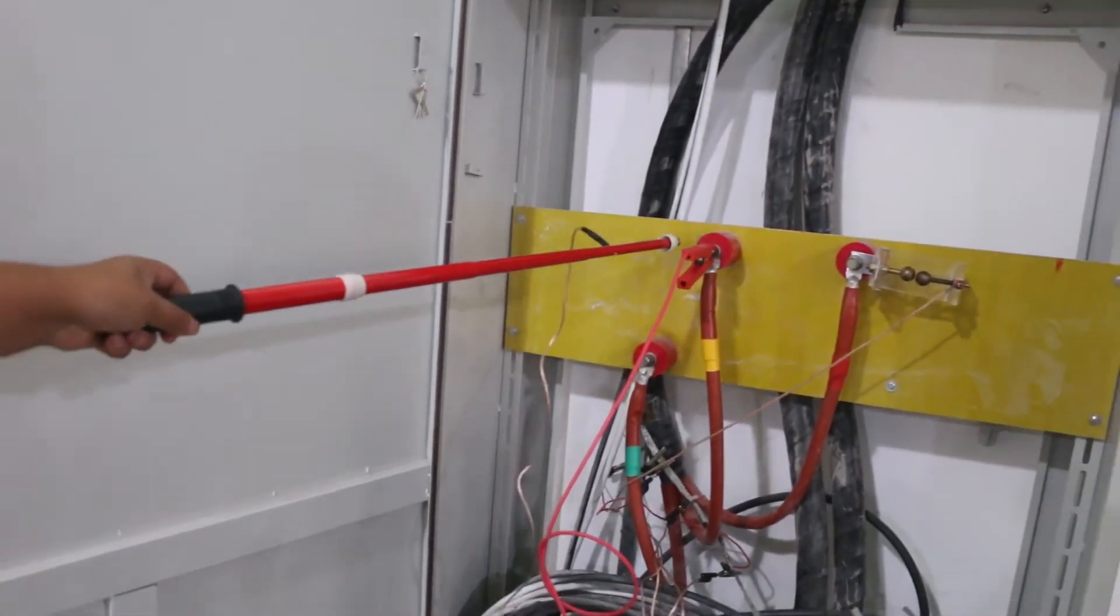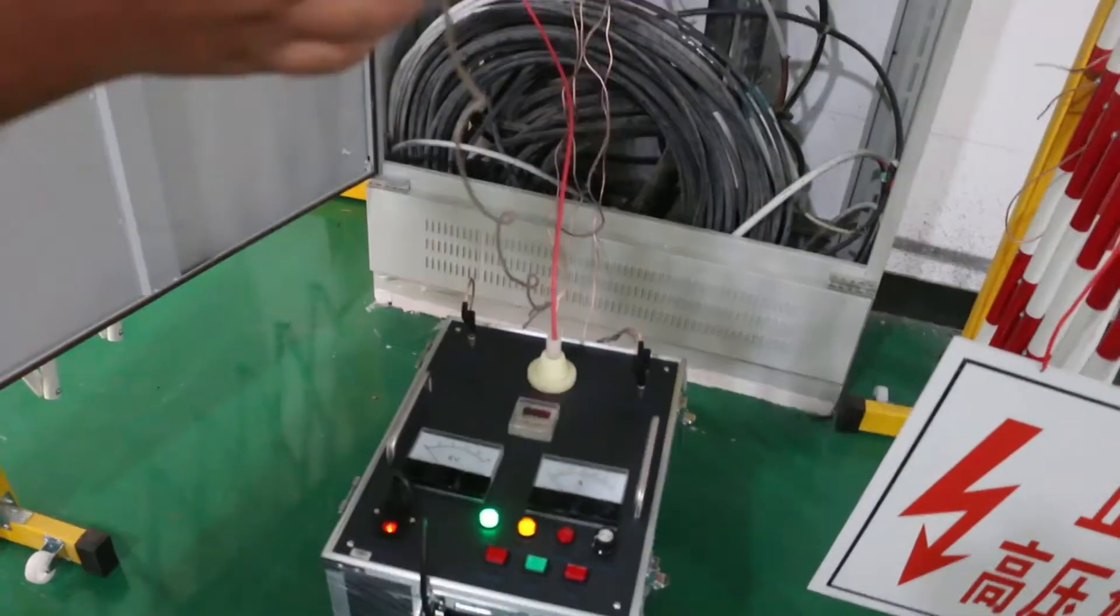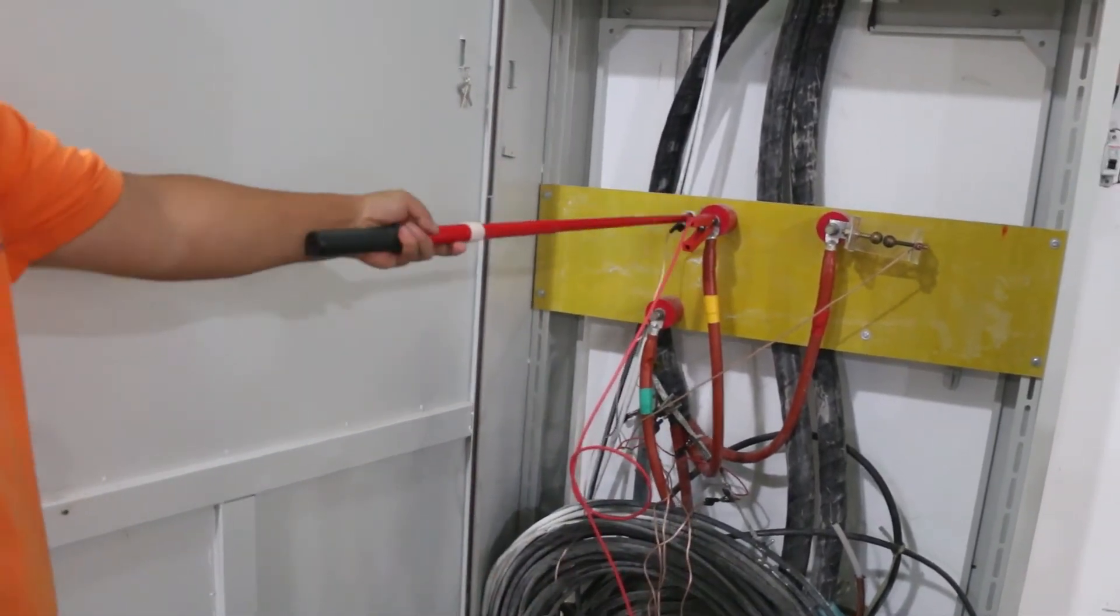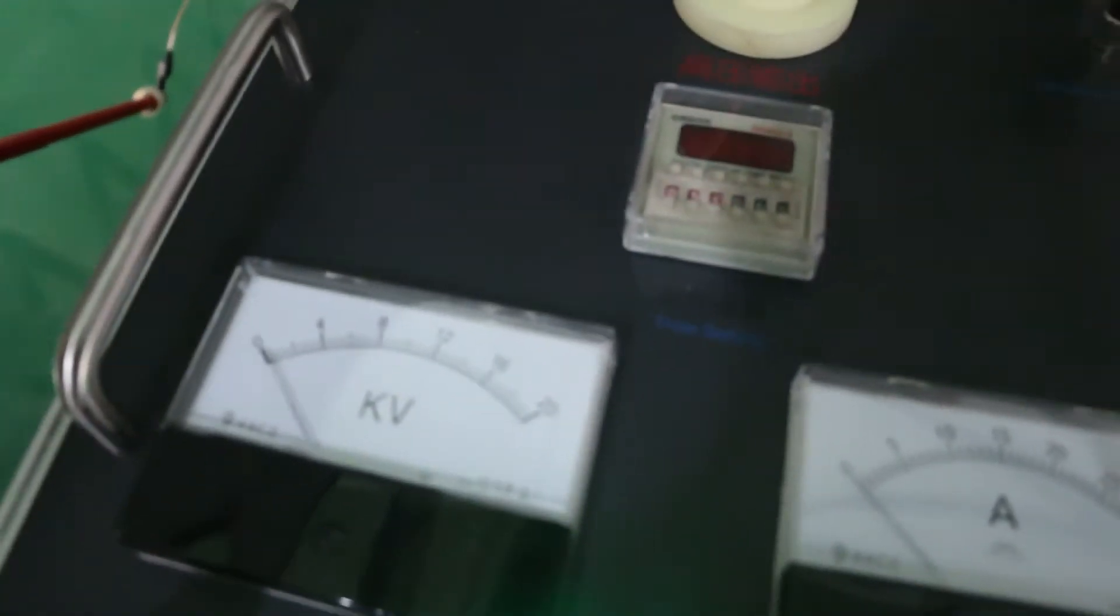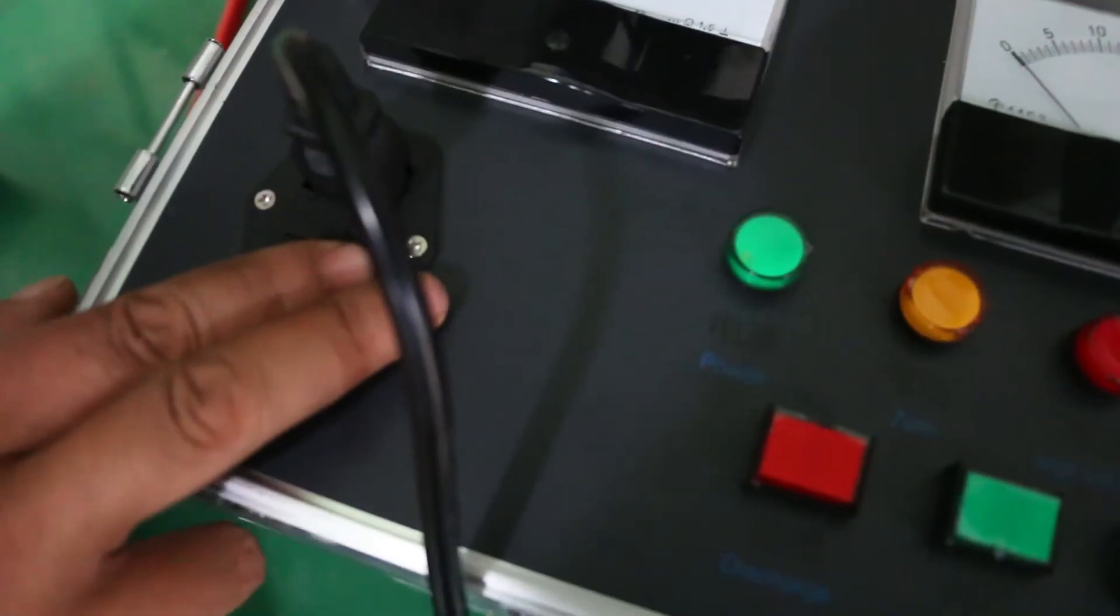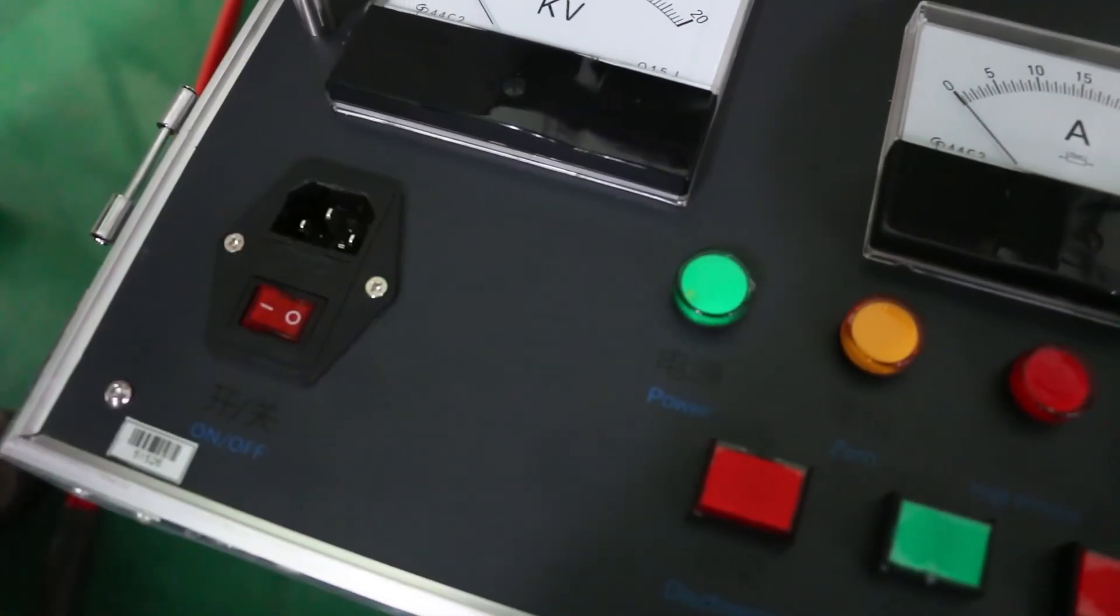Then use a discharging rod to touch the core of cable and press discharging button to discharge. When the voltmeter goes to zero, the discharging is complete. Turn off the machine, disconnect plug, and collect leads.